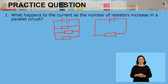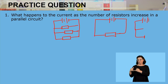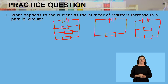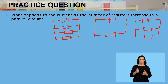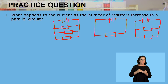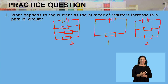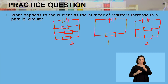And also have another one where we have two resistors. So the question is: what happens to the current as the number of resistors increases in a parallel circuit? Starting from one, two, and then three — what happens to current as we keep on adding another resistor in a parallel circuit?